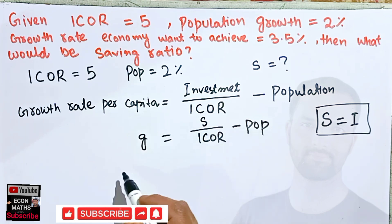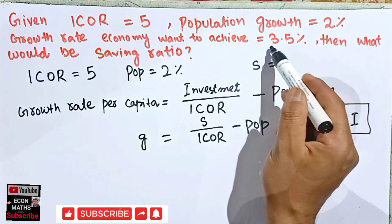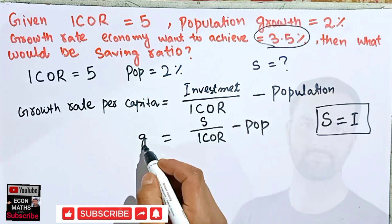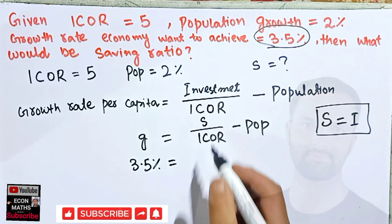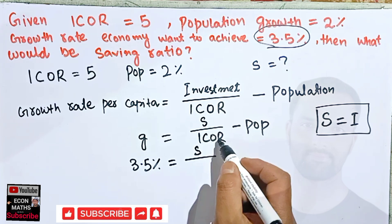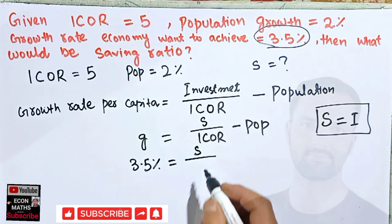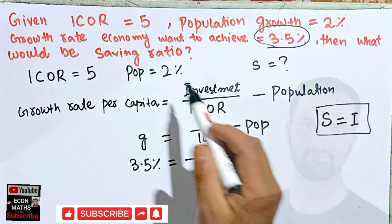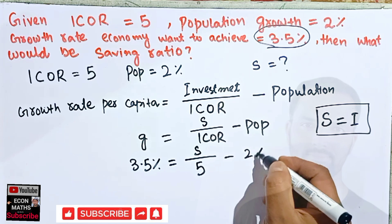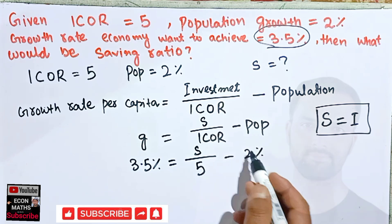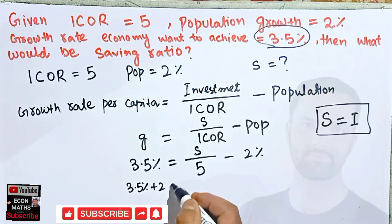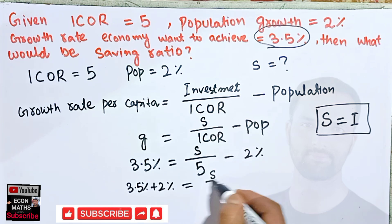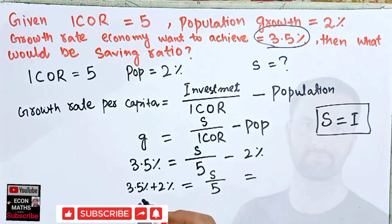The growth rate the economy wants to achieve is 3.5%, so we write: 3.5% equals s upon ICOR — which is 5 — minus population growth rate, which is 2%. Solving for s: transposing 2% to the left-hand side, we get 3.5% plus 2% equals s upon 5.